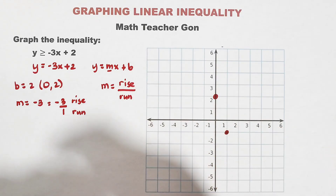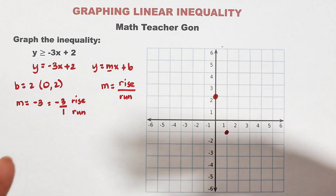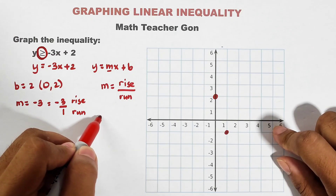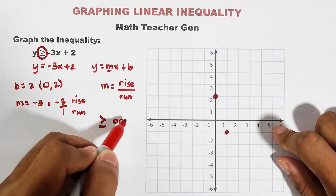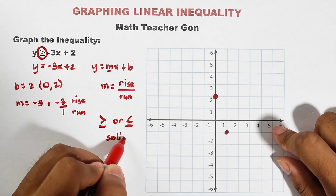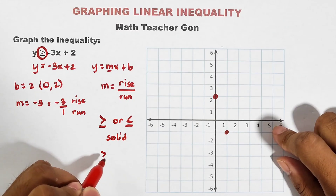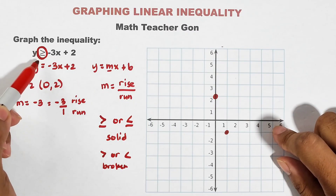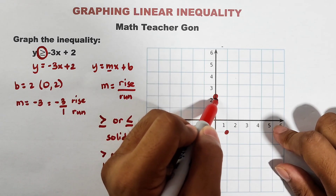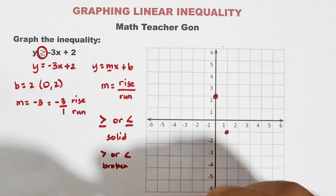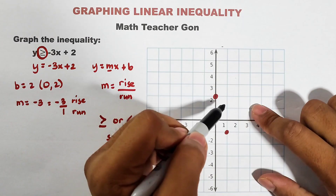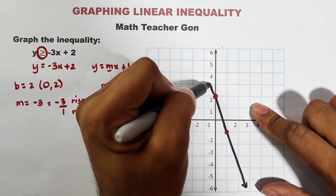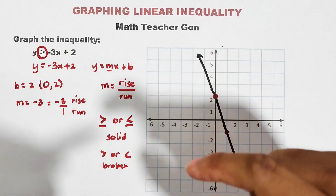Now the question is: is it a broken or a solid line? You need to go back to the original inequality. If the inequality is greater than or equal, or less than or equal, your line is a solid line. If the inequality is strictly greater than or less than, it's a broken line. Since our inequality is greater than or equal, we will use a solid line. You can use a ruler for a straighter line.